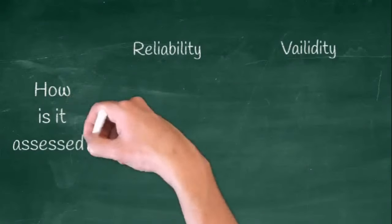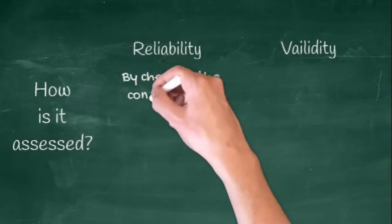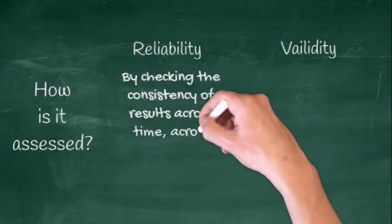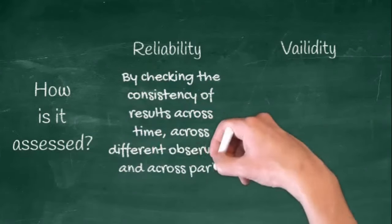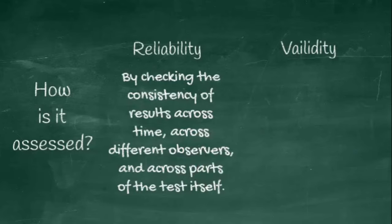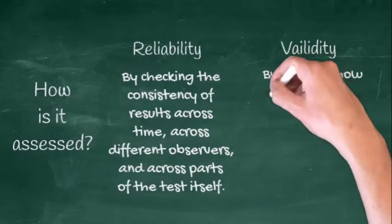Now, how do we know whether it is valid and reliable? Under reliability, it is by checking the consistency of results across time, across different observers, and across parts of the test itself.